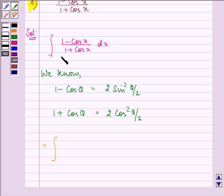Now here we can write 1 minus cos x as 2 sin square x by 2 divided by 1 plus cos x. That is, 1 plus cos x can be written as 2 cos square x by 2 into dx.